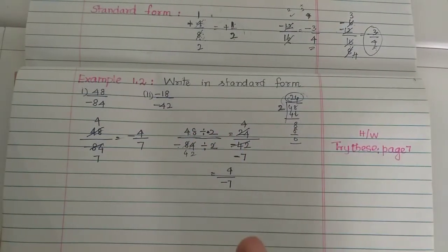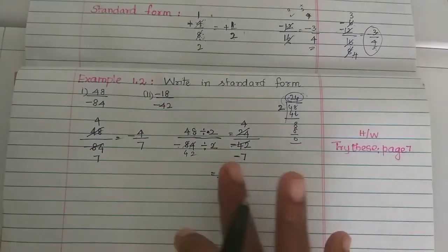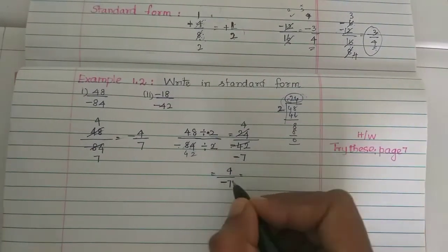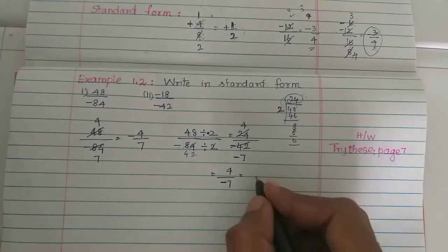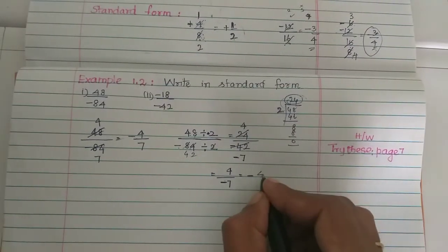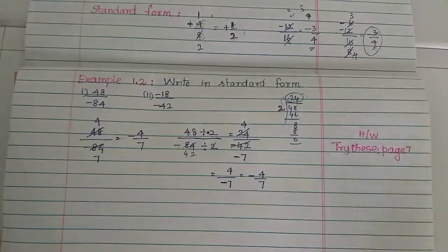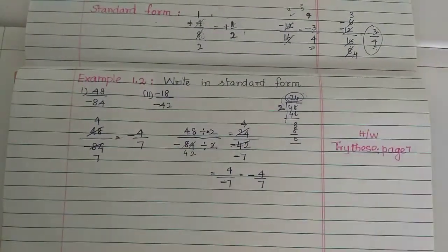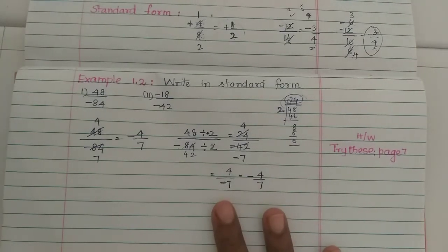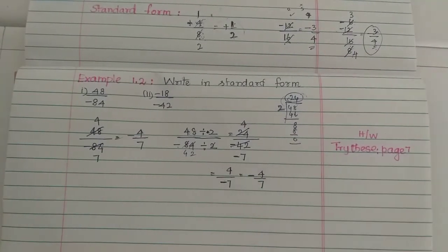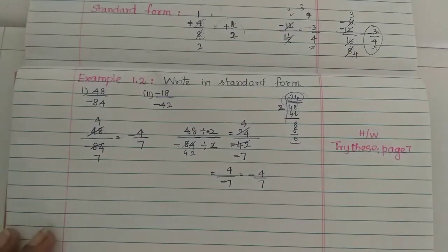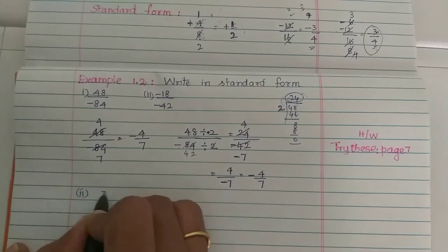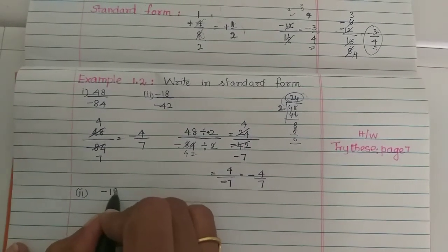When the minus sign is in the denominator, you move it to the numerator or in front of the fraction to get the standard form. The answer 48 divided by minus 84 simplifies to minus 4/7. Now the second subdivision: minus 18 by minus 42.